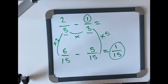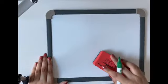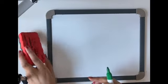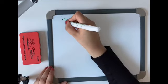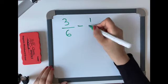Let's have a look at another example. If I did 3 sixths, take away a third.